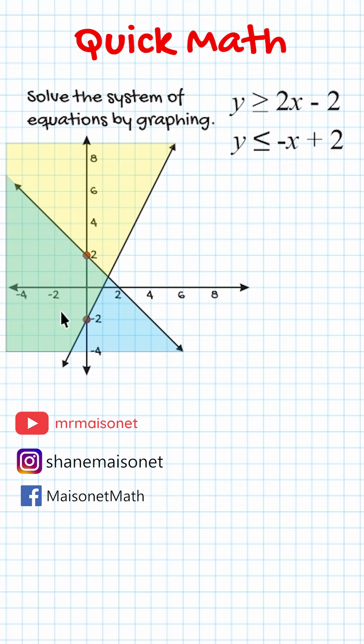And where those two shaded regions intersect, which is in the green, anything that's located in that region would satisfy both inequalities. So let's go to our next question.